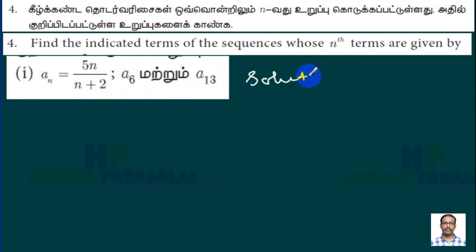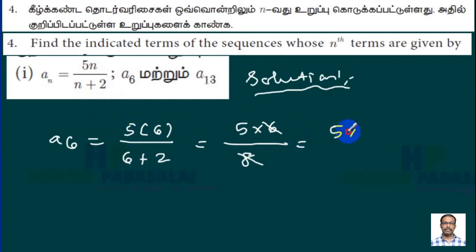For a₆, we substitute n=6 into the formula: a₆ = 5(6)/(6+2) = 30/8. Simplifying this, 5×6 is 30, 6+2 is 8, so we get 30/8, which reduces to 5×3 divided by 4, equals 15/4. Therefore a₆ = 15/4.